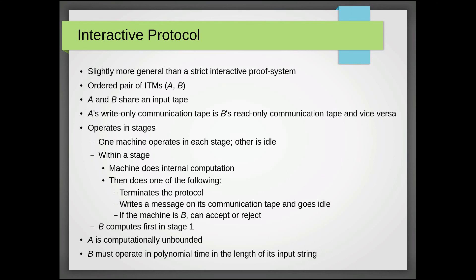So before we go over actual interactive proof systems, we're going to talk about interactive protocols, which are a little bit more general than the stricter interactive proof systems. So in these protocols, we have an ordered pair of these interactive Turing machines, called A and B.